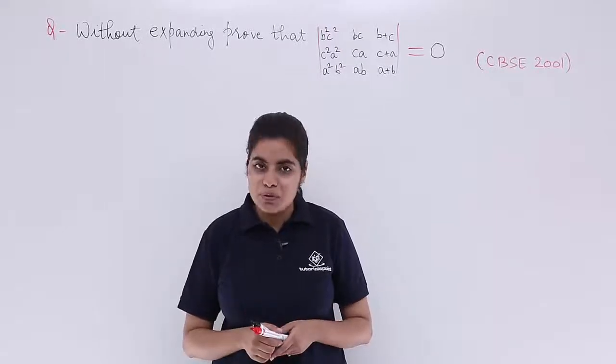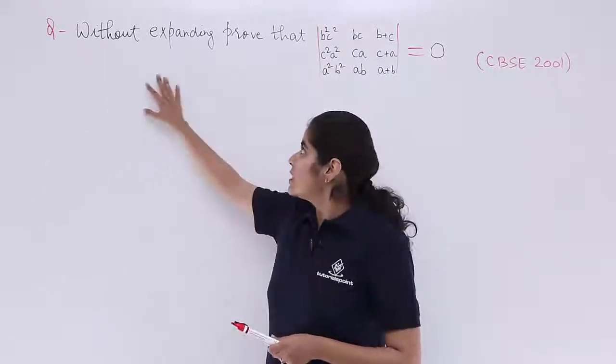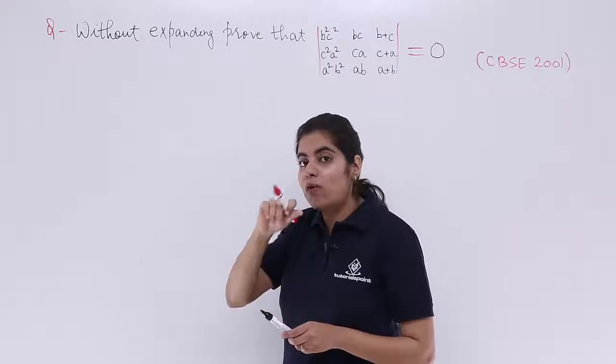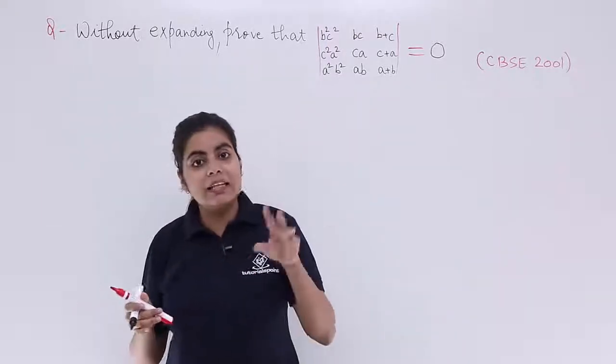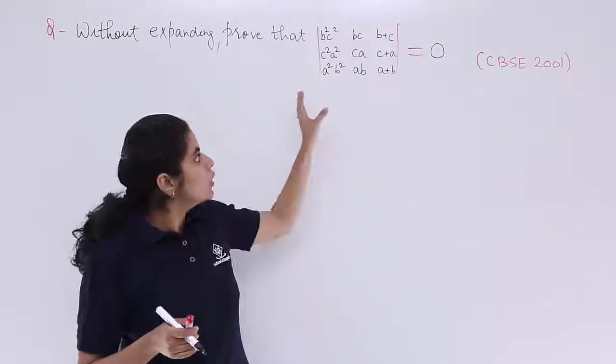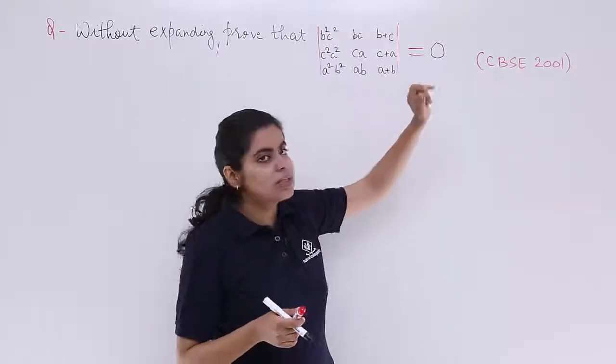There's a question and let's see how to solve it. It says without expanding, and I've already told you, whenever you find this without expanding, that means you do not have to expand. Rather, you have to use some properties. You have to prove that this determinant's value is equal to 0.